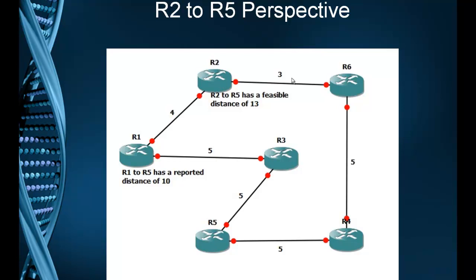In R2's case, he can either go right or left. If he goes right he has a distance of 13, which is lower, so that becomes his feasible distance of 13. But R1 has a reported distance of 10. Because 10 is lower than the feasible distance of 13, the path to R1 would show up in the topology table for R2. And then if the path between R2 and R6 broke, R2 would immediately go to his topology table, find the backup path listed — the feasible successor — and start sending data that way without having to send queries.